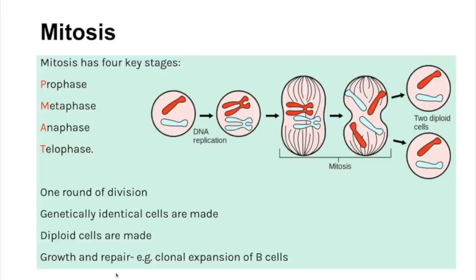Mitosis is split into four stages: PMAT — prophase, metaphase, anaphase and telophase. Key facts about mitosis: it is only one round of division; genetically identical diploid cells are created (two copies of every chromosome); and it is used for growth and repair — a specific example being the clonal expansion of B cells.